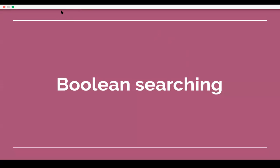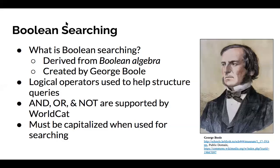Good morning, everybody. I'm going to quickly go over some Boolean searching basics. Boolean searching is derived from Boolean algebra, which was created in the 19th century by English mathematician George Boole. Boolean searching uses logical operators in search systems, like our library catalog, to help structure queries. WorldCat supports the Boolean operators AND, OR, and NOT. For these words to function as operators in the catalog, they must be in all caps when searching.